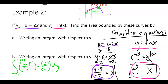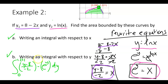To review: we wanted to find an area two different ways — with respect to x and with respect to y. First we found where the curves intersect, then set up integrals going left to right for dx. For dy, we transformed the equations into functions of y and integrated from bottom to top.